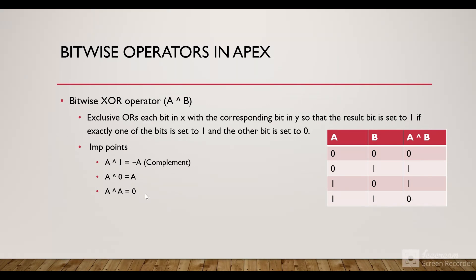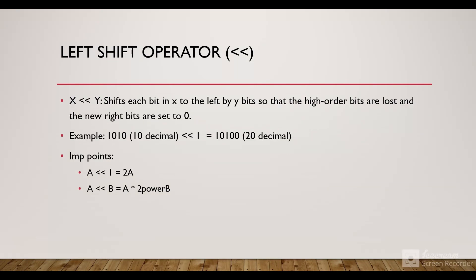These important points will help us in solving some questions which we can solve with a bitwise operator, which we are going to see later. Now let's see the bitwise left shift operator. What it does is it shifts each bit in X to the left by Y bits so that the high order bits are lost and the new right bits are set to 0. For example, 1010 is the binary of a number in decimal format. If I left shift 1010 by 1, I will move all these 4 bits by 1 and the answer would be 10100.